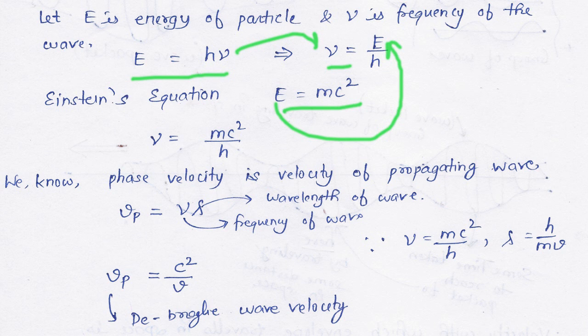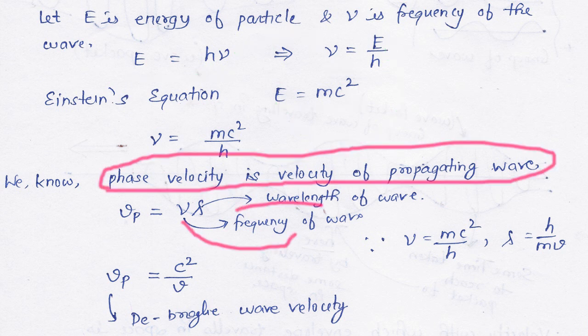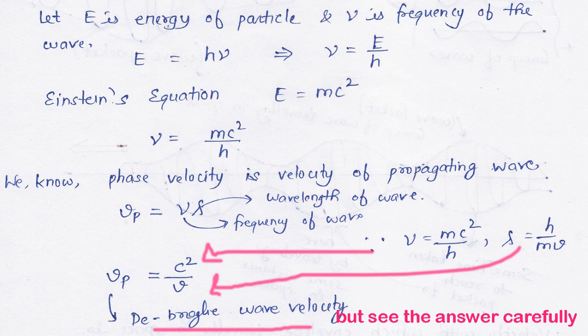Using both equations, we know that phase velocity is the velocity of the propagating wave. Phase velocity Vp equals nu times lambda. Substituting nu equals mc squared divided by h and lambda, we get Vp equals c squared divided by V.